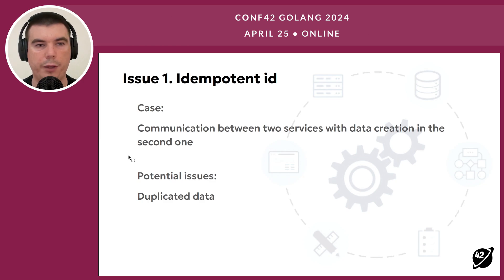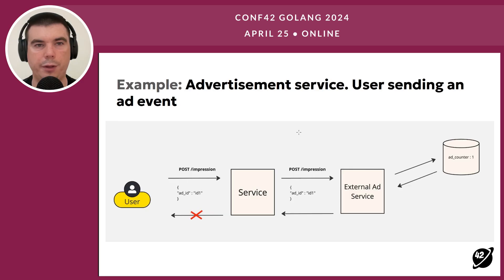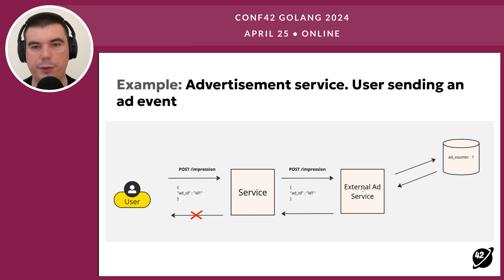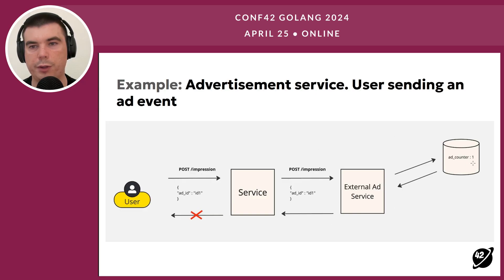It can happen when there is communication between two services with data creation in the second service. It can lead to duplicated data. Let's consider this example. We have an advertisement service. In our scheme we have a user who sends us data about an impression of an ad. The payload has an ad id, which is the id of the advertisement we track the impression for. The service also has a downstream dependency — an external ad service with its own database. The final goal of the whole scheme is to increase this counter.